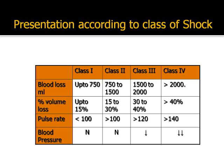In class 1 shock, the blood loss is about 750 mls, that's about 15% blood volume. In this class, there is no increase in pulse rate and the blood pressure is usually normal. In class 2 shock, the loss is about 1.5 liters or 3 units, and the blood volume loss is about 30%. There is usually an increase in the pulse rate, but the blood pressure remains normal. This should illustrate to us that blood pressure is not a good indicator of early shock and we should not depend on it.